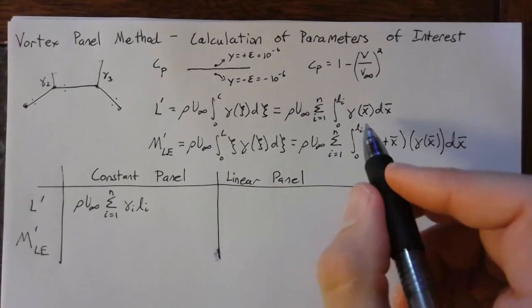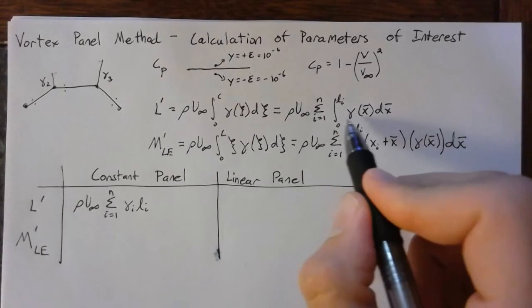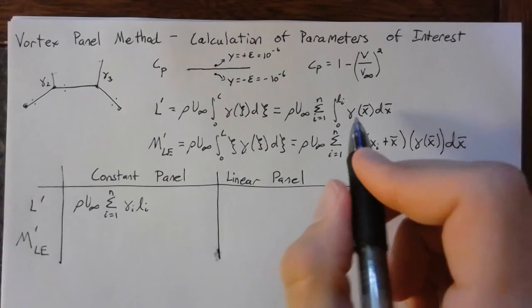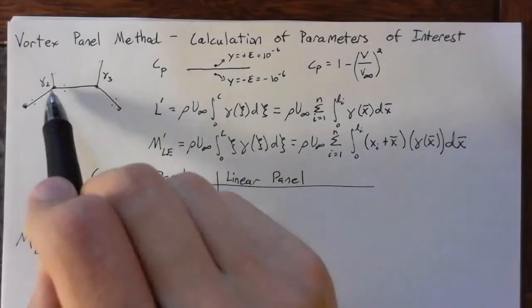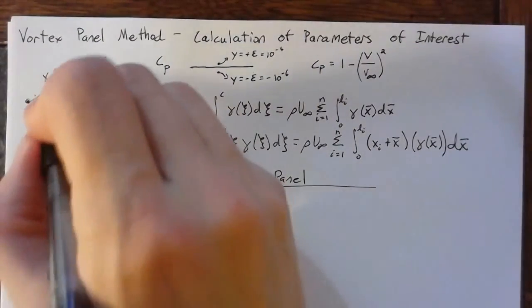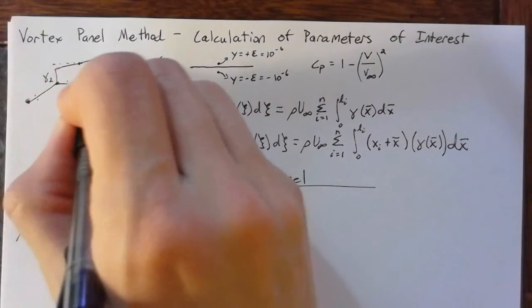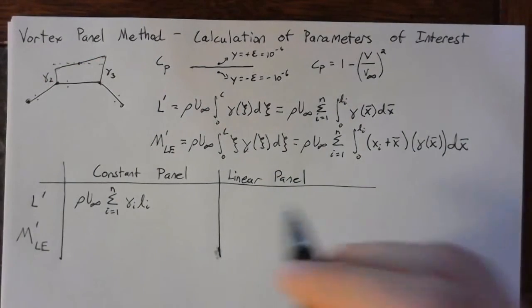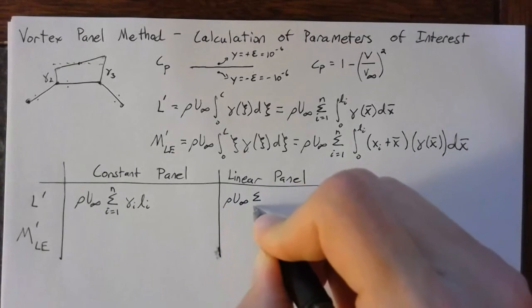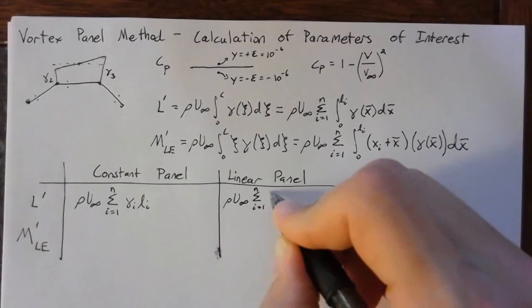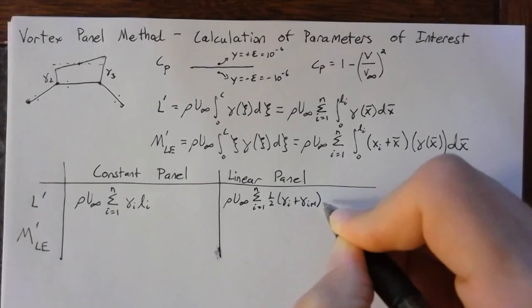If we have a linear panel, then this integral over Li becomes just the average. Right? So the average is simply the sum of gamma i and gamma i plus 1 divided by 2. So if we had these two points, then we could simplify this using the trapezoid rule, which is exact for linear. And this becomes rho u infinity times the sum i is equal to 1 to n. And you have this 1 half gamma i plus gamma i plus 1 times L of i.